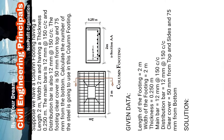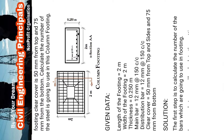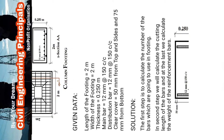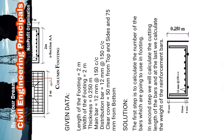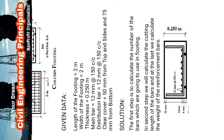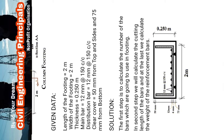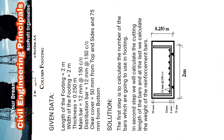Calculate the number of steel bars to be used in this column footing. Given data: length of footing = 2 meters, width of footing = 2 meters, thickness = 0.25 meters, main bar = 20 millimeter at 150 center to center, distribution bar = 12 millimeter at 150 center to center. Clear cover is 50 millimeter from top and sides and 75 millimeter from bottom.